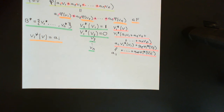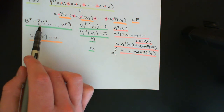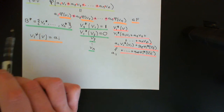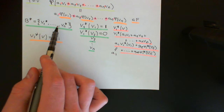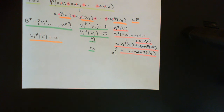Welcome back. We've now seen what the dual basis for the dual vector space is going to be equal to. It's going to be the set of co-vectors V1 star, V2 star, all the way up to Vn star, where each one of these maps sends all vectors onto their coordinate with respect to the equivalent basis vector back in the original vector space.